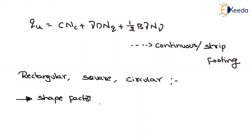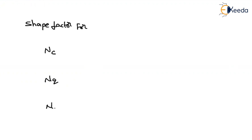The effect of shape is considered by using shape factors. These shape factors are included in the terms Nc, Nq, and Nγ. Depending upon the shape of the footing, we will find out the shape factors and multiply them with the corresponding bearing capacity constants. Let me write down a table here — shape factor for Nc, shape factor for Nq, and shape factor for Nγ.